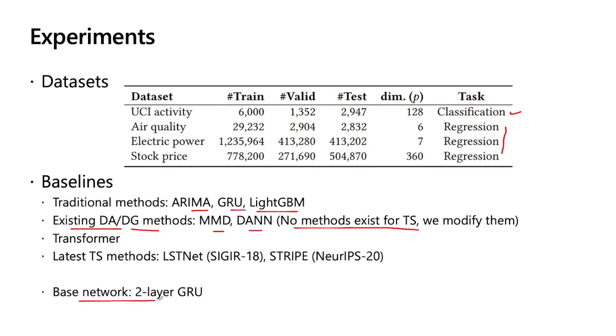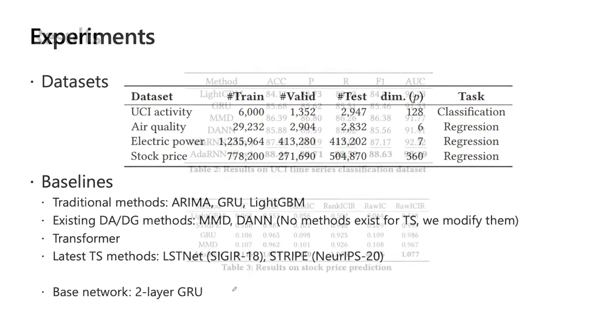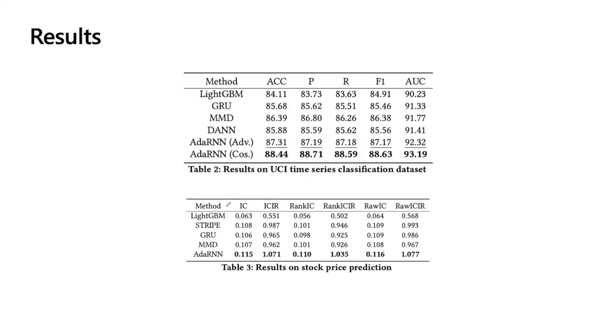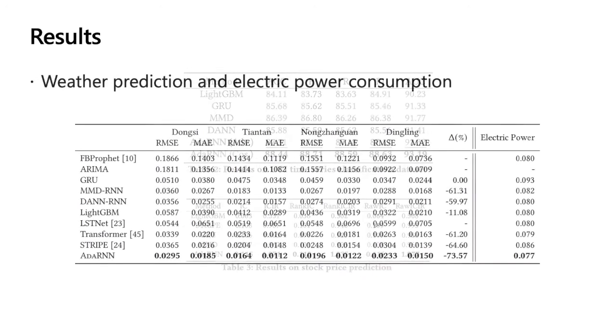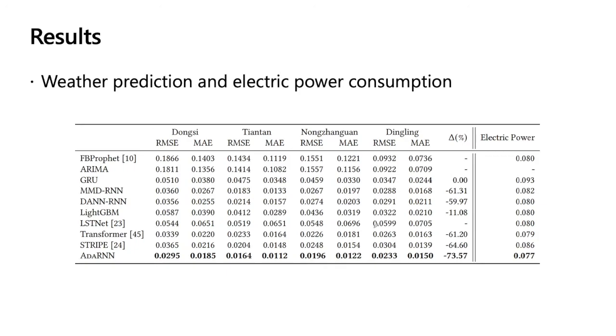Our backbone network is a two-layer GRU. But note that the GRU is only an improved version of RNN. Certainly, our work does not depend on GRU, but can also apply to RNN and LSTM too. The results are remarkable. For example, in this one, we can see that for time series classification, our AdaRNN achieves the best performance. And in this stock price prediction, we can see that our work can also achieve the highest IC and ICIR values across all the metrics. Thirdly, we can see that the weather prediction and electric power consumption gives the best performance of our method.